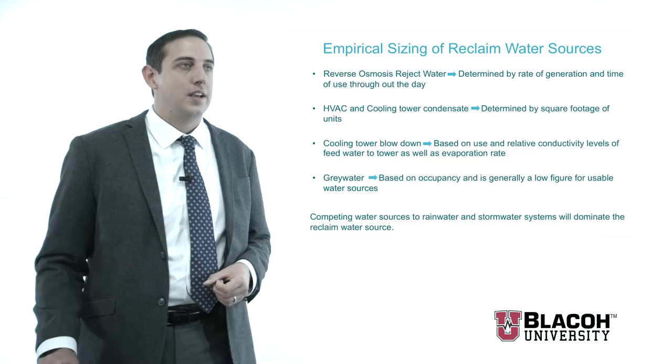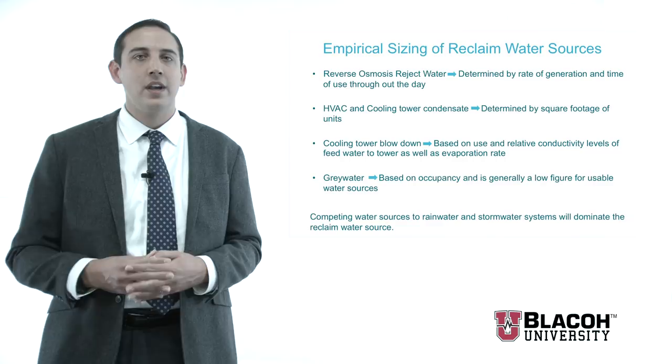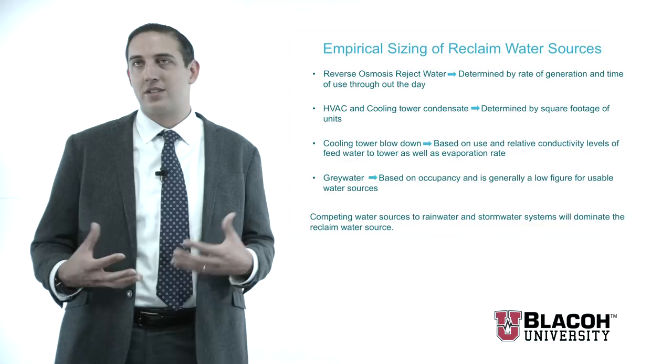For other reclaimed water sources such as reverse osmosis, HVAC and cooling tower condensate, and cooling tower blowdown, these systems are designed based on empirical data — how large your cooling tower is, what the flow rate of your reverse osmosis system is. This also includes devices like dialysis machines in hospitals as a source of reverse osmosis reject water. Reverse osmosis and HVAC and cooling tower condensate are generally classified as clear water systems. Cooling tower blowdown is classified predominantly as more of a gray water source.